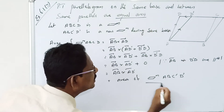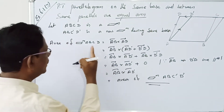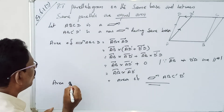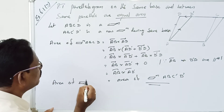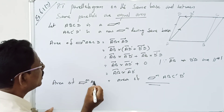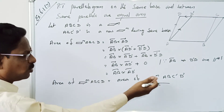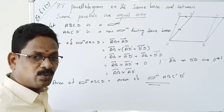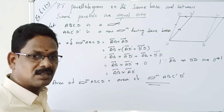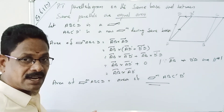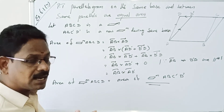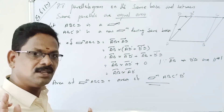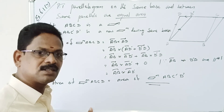What is AB cross AD'? It is the area of parallelogram ABCD'. Therefore, the area of parallelogram ABCD equals the area of parallelogram ABCD'. So parallelograms on the same base between the same parallels have equal areas.